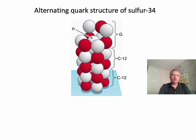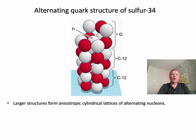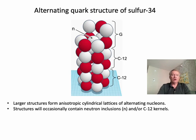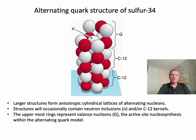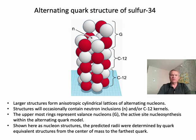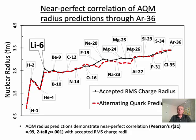Larger structures conform to anisotropic cylindrical lattices of alternating nucleons, essentially stacked six-nucleon rings. Occasionally these rings will include a neutron in the canal, and the rings are made of C12 kernels stacked one upon the other. The uppermost rings represent valence nucleons, which are the active site for nucleosynthesis. And although these structures are depicted as protons and neutrons, the actual structures and the calculations of the radii were determined using alternating quarks. The net result is a near-perfect correlation of AQM radius predictions through argon-36.